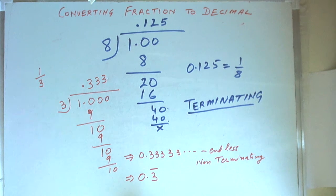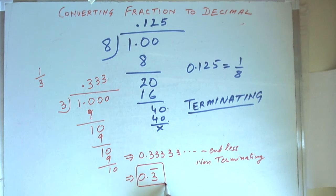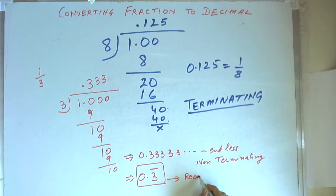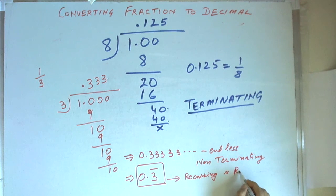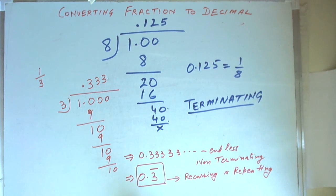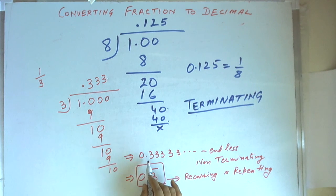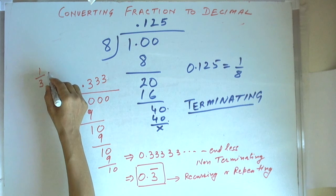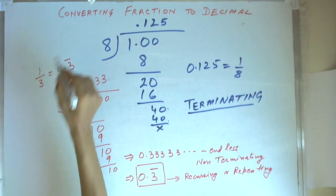Therefore, we put a line on top of 3, meaning it is a repeating value. This is called recurring or repeating, and the numeral 3 will be repeating endlessly. So, 1 by 3 is reflected in decimal like this.